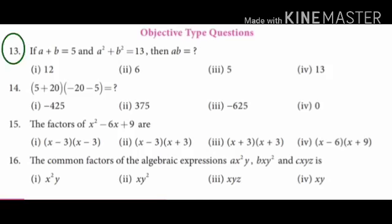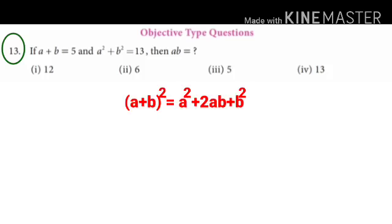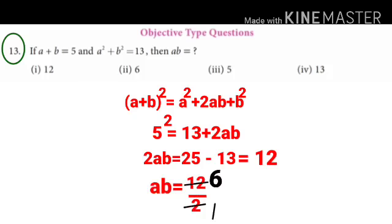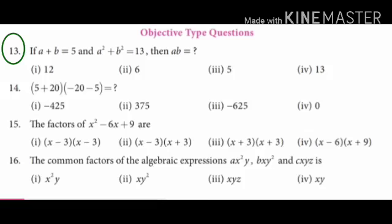Objective type questions. 13th sum: If a plus b equals 5 and a squared plus b squared equals 13, then ab equals? Using the a plus b whole squared formula: a plus b whole squared equals a squared plus 2ab plus b squared. Substituting: 5 squared equals 13 plus 2ab, so 25 equals 13 plus 2ab, giving 2ab equals 25 minus 13 equals 12, therefore ab equals 12 divided by 2 equals 6. The answer is option 2: 6.